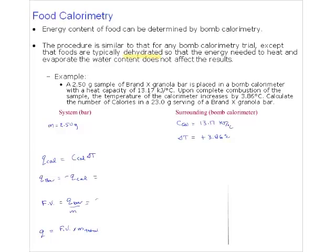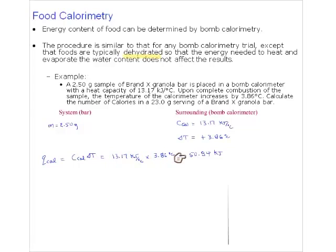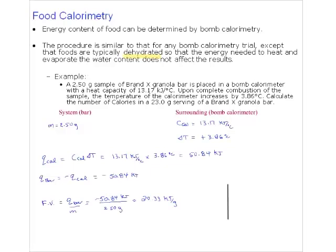First, calculate the heat absorbed by the calorimeter: C_cal × ΔT = 13.17 × 3.86 = 50.84 kilojoules gained. Now we know how much energy was absorbed by the calorimeter. By the first law of thermodynamics, that energy came from the bar - so the bar released 50.84 kilojoules. Now we have all the information to calculate the fuel value: a 2.5-gram sample released 50.84 kilojoules, so the bar has a fuel value of 20.33 kJ/g.